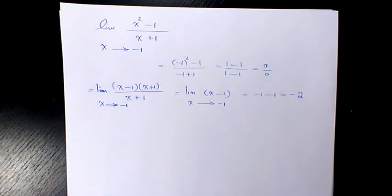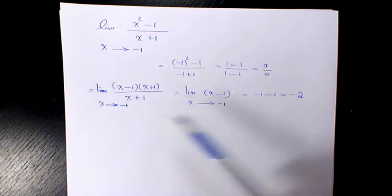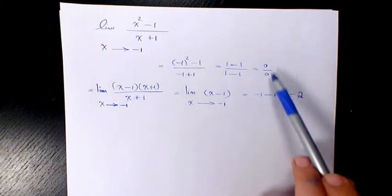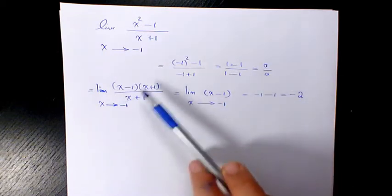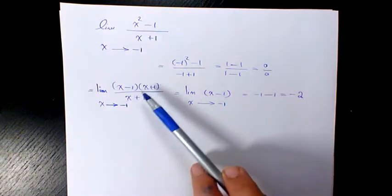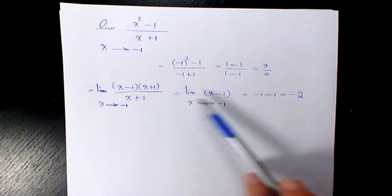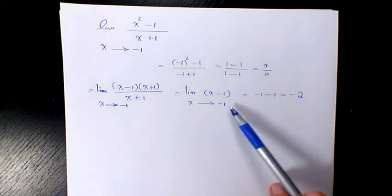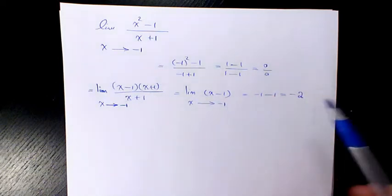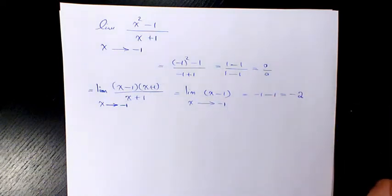So that's basically how to calculate the limits. In some examples when it is 0 over 0, you can factor the numerator and denominator, cancel out, and when you simplify it you can evaluate the limit again.